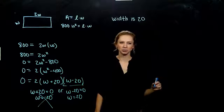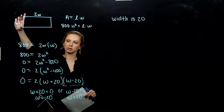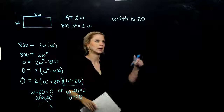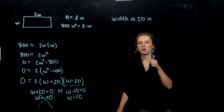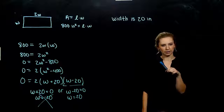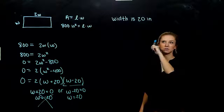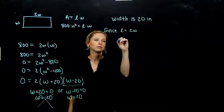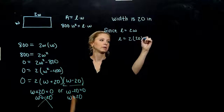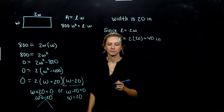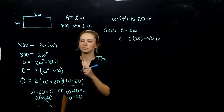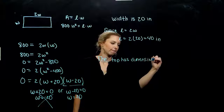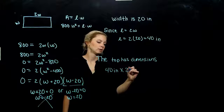Width is 20 inches. Since we're dealing with square inches, the width has units of inches. Now how do we find the length? The length is two times the width, so we plug back in: L = 2W = 2 × 20 = 40 inches. The countertop — the butcher block top — has dimensions 40 inches by 20 inches.